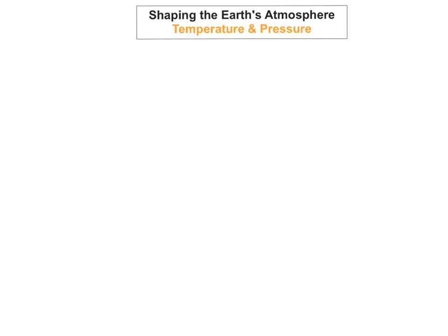However, the sun's heat is not evenly spread out because of the shape of the Earth and because of latitude. Latitude refers to the distance north or south of the equator. Usually, the further you are north or south of the equator, the colder it gets.